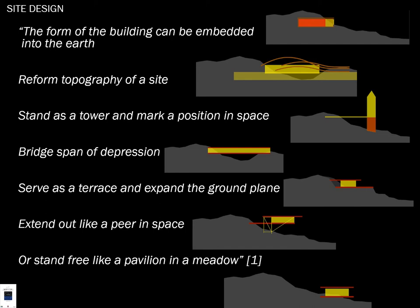In site design, we think about terrain and how we're placing our building. It can be embedded into the earth — Frank Lloyd Wright would want that, as at Taliesin, built at the brow of the hill. 'Don't destroy the hill by putting the building on top,' he would say. Alternatively, you can reform the topology of the site with cut and fill, mark a position with a standing tower, bridge across space, terrace and expand the ground plane, or stand free like a pavilion in a meadow.